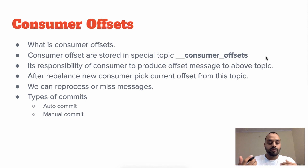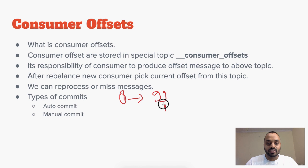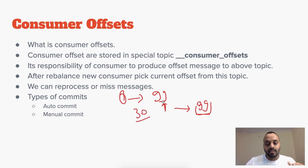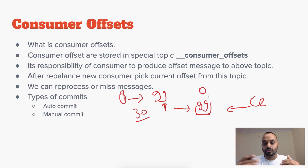Next is manual commit. In manual commit, we need to manually commit the offset. Let's say data came from 0 to 99 — whenever we have fully processed this batch, after completing all 99 messages, we commit offset 99. But the problem is if the consumer dies at message 30, the new consumer C2 comes in and since we have not committed anything yet, it will start reading from 0. So messages from 0 to 30 will get reprocessed.